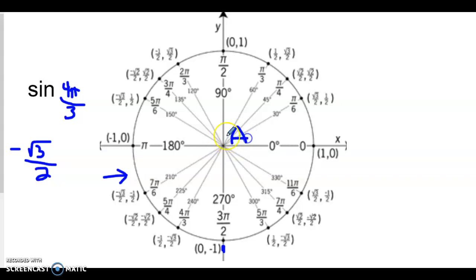All Students Take Calculus. So in this quadrant, all of them are positive. In the second quadrant, sine is positive. In the third quadrant, tangent is positive. And in the fourth quadrant, cosine is positive.